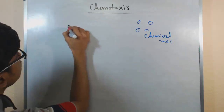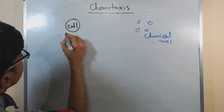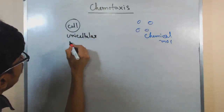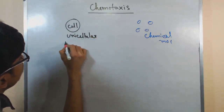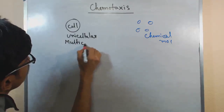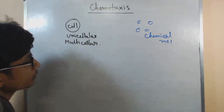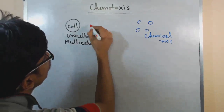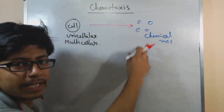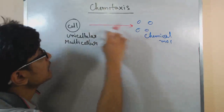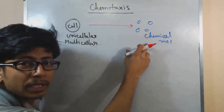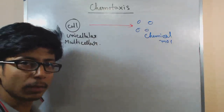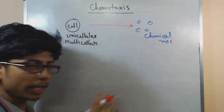So we write it as a cell here. It can be a unicellular organism or it can be the cell of a multicellular organism. That cell will go towards the direction of that chemical molecule because the cell is attracted to those chemical molecules. This movement of a cell based on the attraction for certain chemical molecules is termed as chemotaxis.